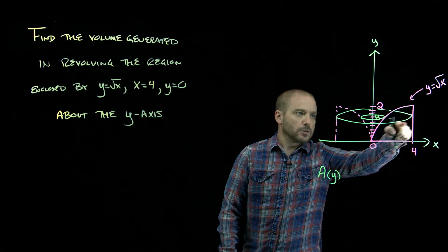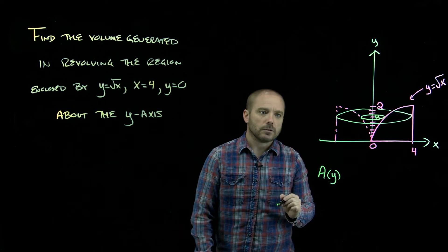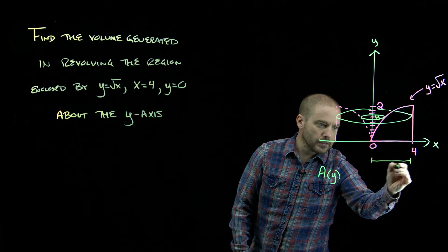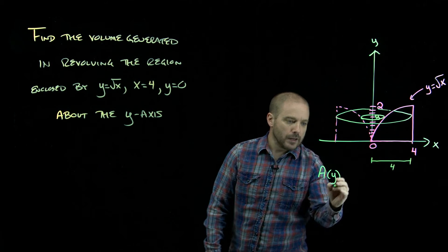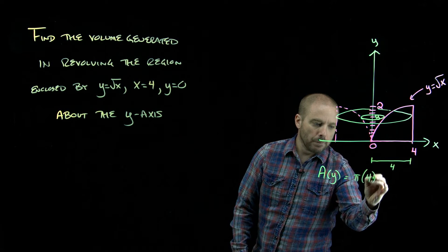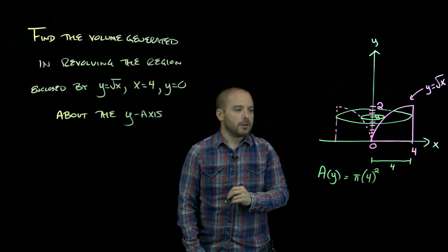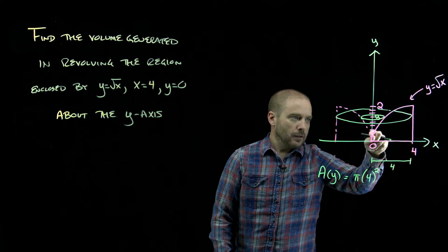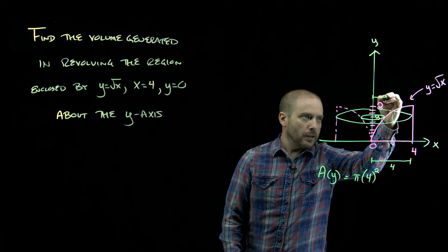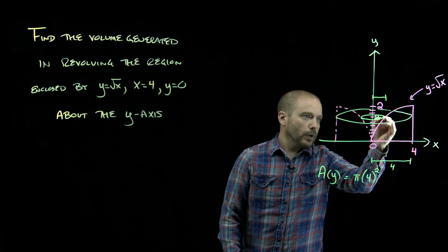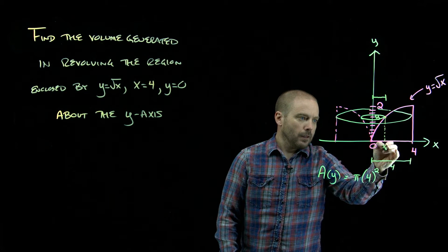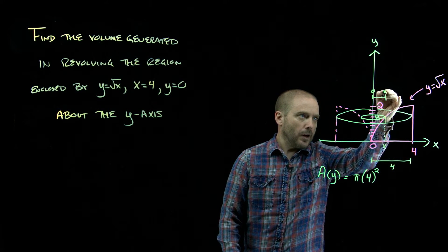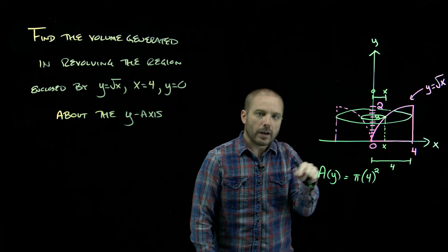We want to take that bigger circle. What's the radius of that bigger circle? It's always being determined by that vertical line x equals 4, so no matter where you slice it, that big radius is 4. So the bigger circle is π·4². The smaller circle is being determined by the curve — that distance from the y-axis to the curve is whatever that x value is.